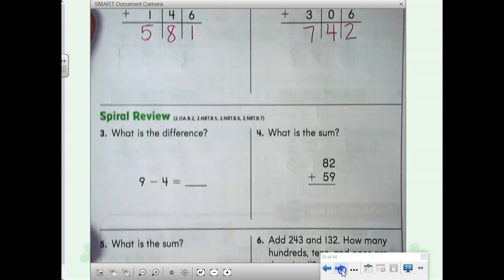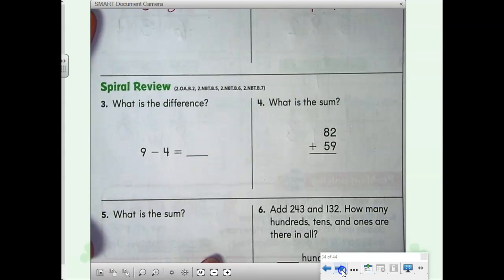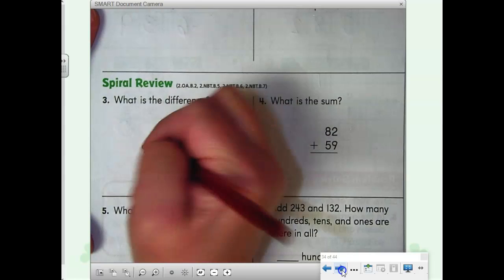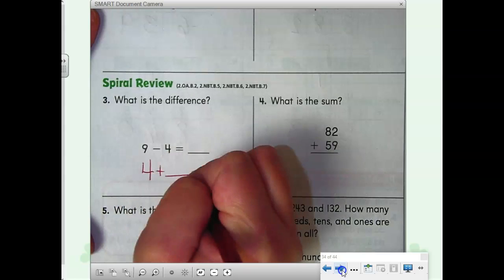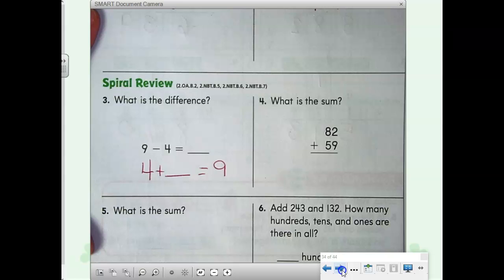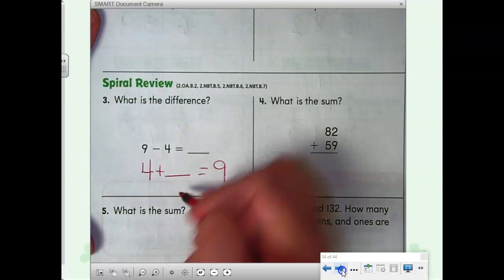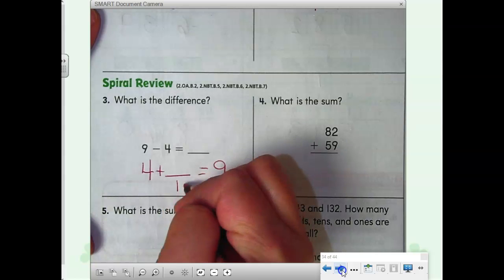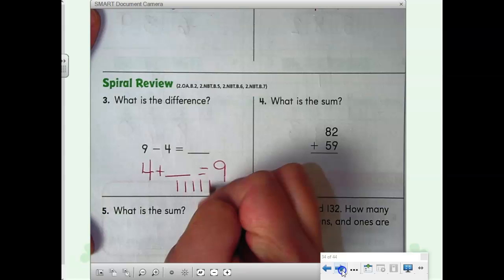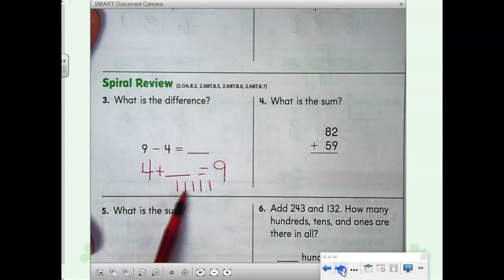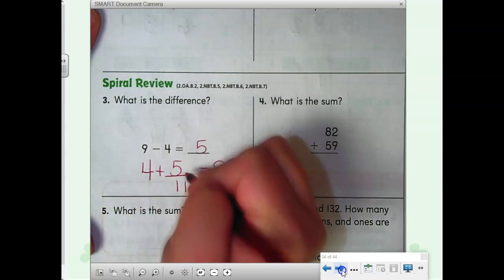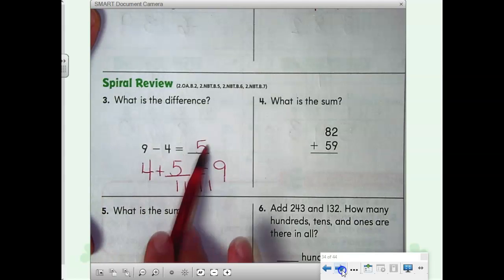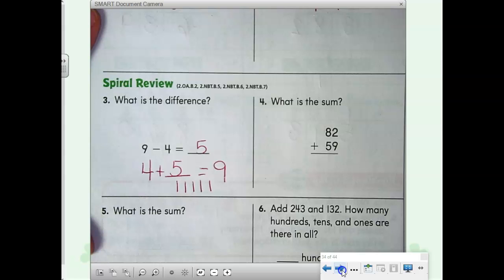Our spiral review. That means review of what we've already learned. What is the difference? 9 minus 4. You can count backwards. Or you can say 4 plus what number equals 9? Using my related facts. 4, count on. 5, 6, 7, 8, 9. 1, 2, 3, 4, 5. So, what's my answer? 5. If 4 plus 5 equals 9, 9 minus 4 equals 5. Do you have trouble counting back? Count on.